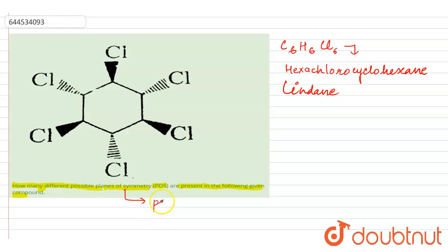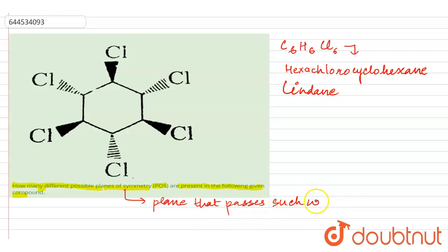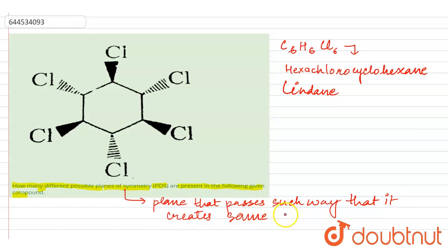A plane of symmetry is the plane passing through any compound that divides that compound into two exactly same structures — a plane that passes through the compound in such a way that it creates two same molecules.